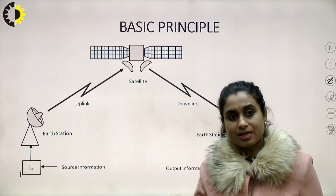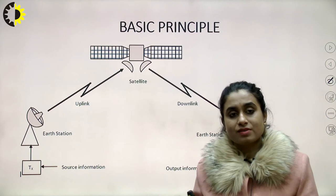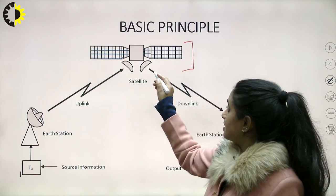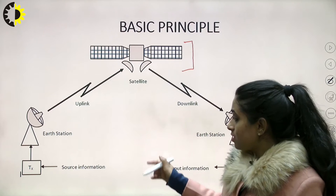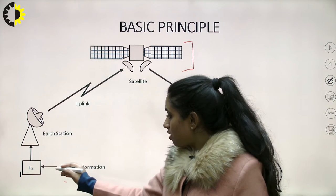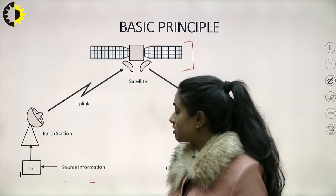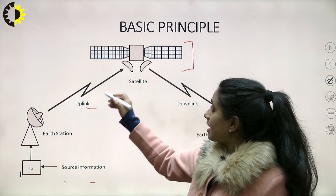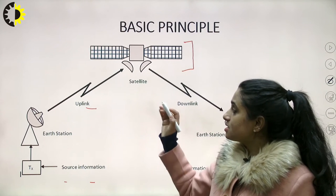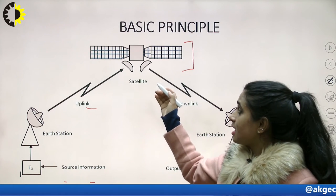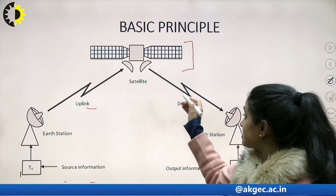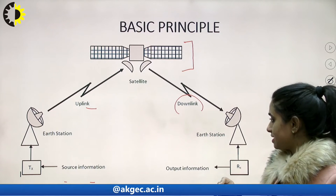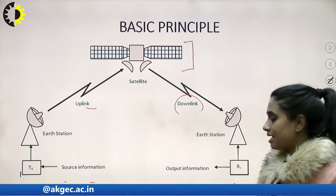With this picture, we can show the basic principle and working of a satellite. This is our satellite suspended in space, located in an orbit. This is our basic transmitter or source of information, and this is our earth station. With the help of the earth station, we transmit on a particular frequency called the uplink frequency that goes into space. The satellite catches it, performs the necessary alterations — amplification and analysis — and down-converts that frequency as the downlink, communicating with the receiving earth station, which then routes it to the desired destination.